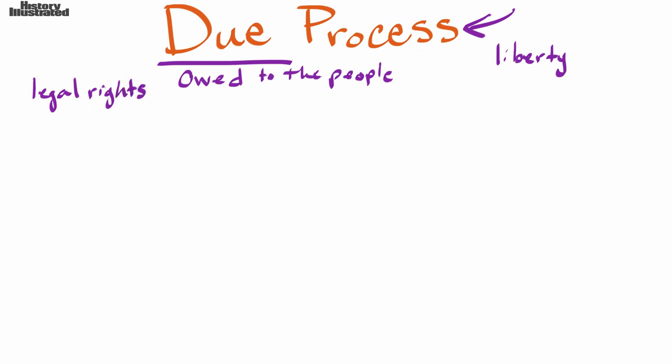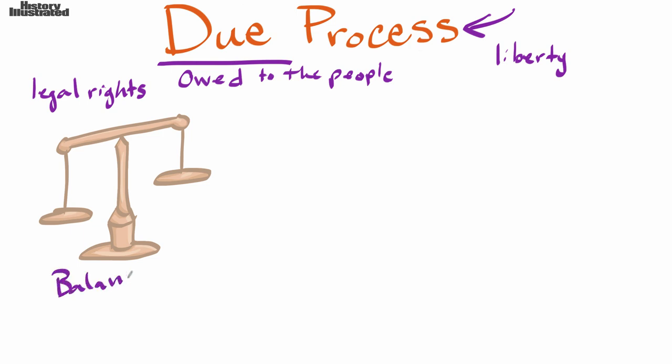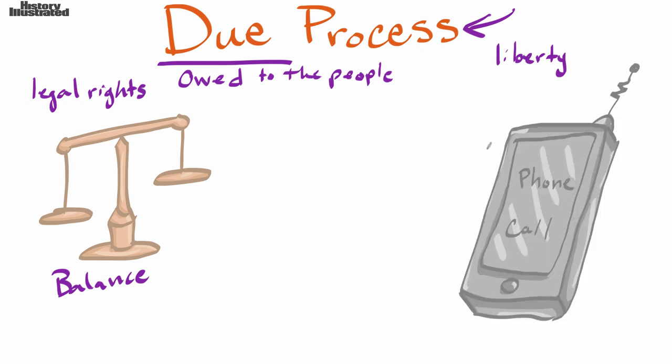The government has to respect your legal rights. This is often represented with scales that are balanced—we call this justice. You are owed certain things from the government, such as you may have heard on TV, something along the lines of a phone call. When people are arrested, they say, 'Hey, you owe me a phone call.'